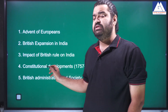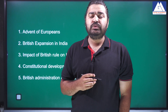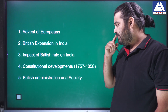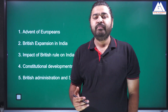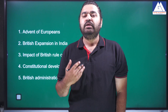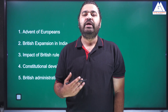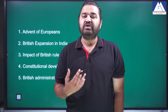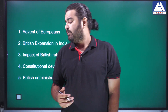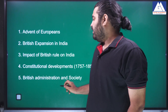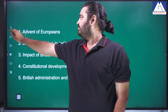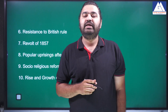The fifth chapter is British administration and society. This covers British education, press, administration, Indian religious matters, conversion acts, judiciary, police reforms, and civil service reforms. The sixth chapter deals with resistance to British administration.